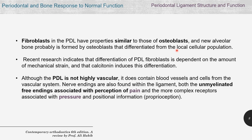Fibroblasts have properties similar to those of osteoblasts. New alveolar bone is probably formed by osteoblasts that differentiate from the local cellular population. Recent research indicates that differentiation of PDL fibroblasts is dependent on the amount of mechanical strain, and that calcitonin induces this differentiation. Although the PDL is not highly vascular, it does contain blood vessels and nerve endings which let us feel pain.